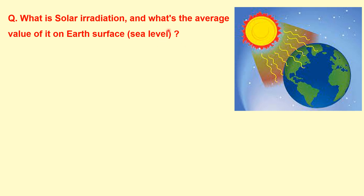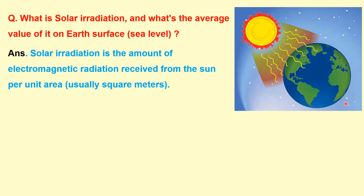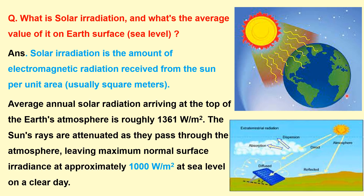What is solar irradiation and what is its average value on Earth's surface? Solar irradiation is the amount of electromagnetic radiation received from the sun per unit area. The average annual solar radiation arriving at the top of Earth's atmosphere is around 1361 W/m², but due to attenuation by the atmosphere, we get approximately 1000 W/m² at sea level on any clear day.